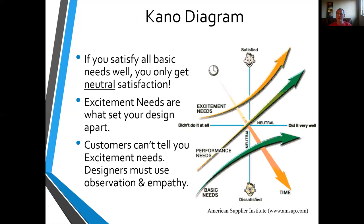I want to step back for a minute and talk a little more about needs versus wants from the perspective of relative importance — what the auto industry learned about this. This is called the Kano diagram, and it identifies effectively three types of needs: the basic, the performance, and the excitement.